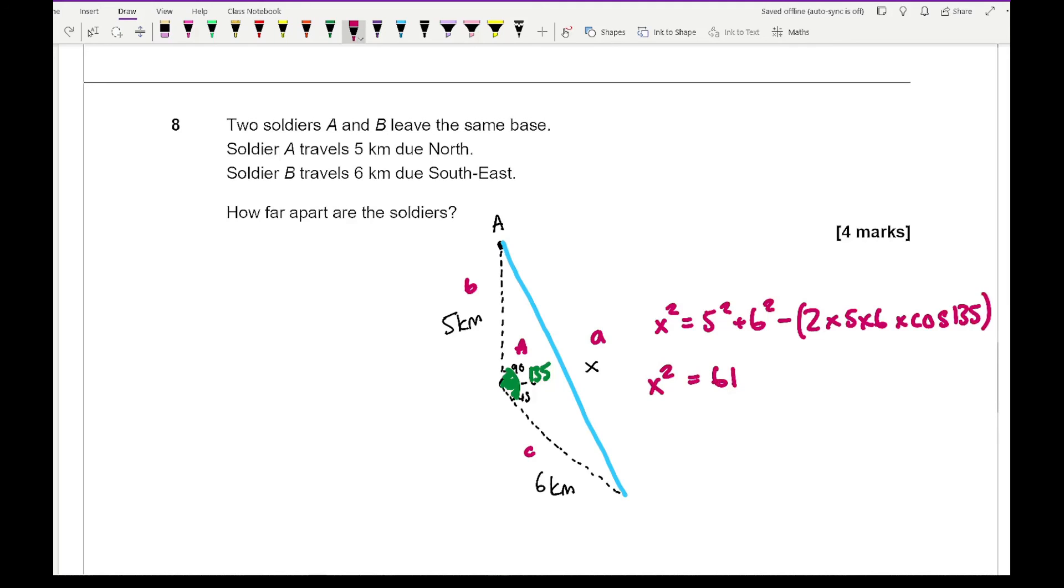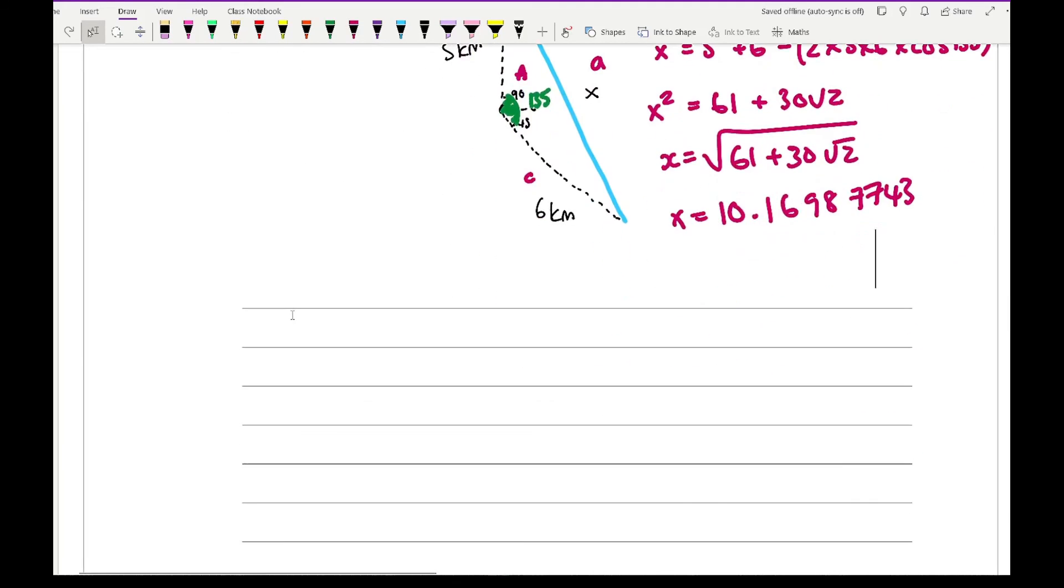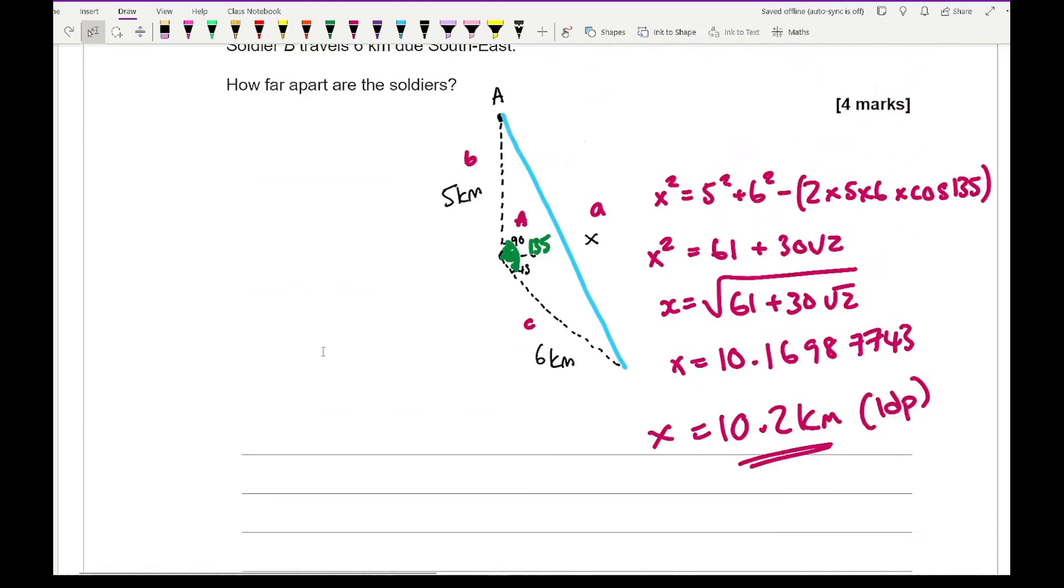And then if I square root the answer so x equals the square root of 61 plus 30 root 2. Now you don't have to write it in the exact form. You can just simply write it as a decimal. But you should have the correct answer as being 10.16987743. Giving me a final rounded answer of around about 10.2 I would say. So x equals 10.2 kilometres. Oh I don't know what's going on with that m. So let's just pull that out. Kilometres and that's to one decimal place. And there's my final answer. And the last of the question on this topic test.